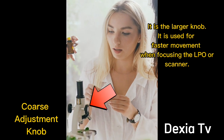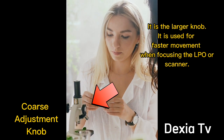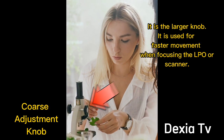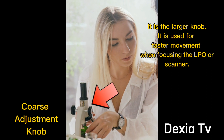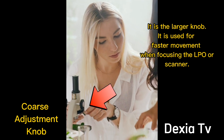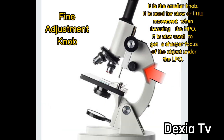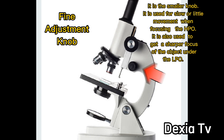Coarse adjustment knob: It is used for faster movement when focusing the LPO or scanner. Fine adjustment knob: It is used for slow or little movement when focusing the HPO.